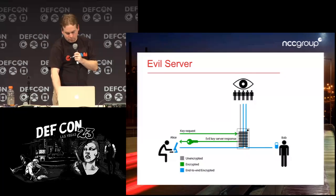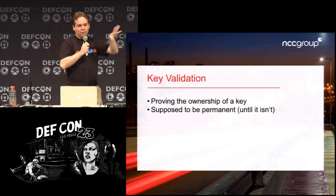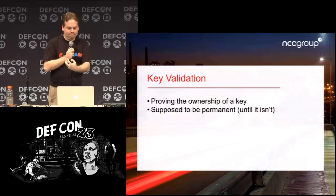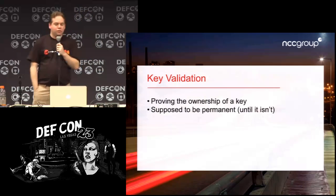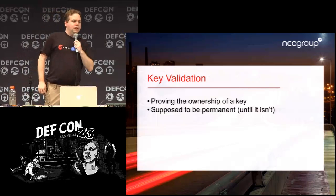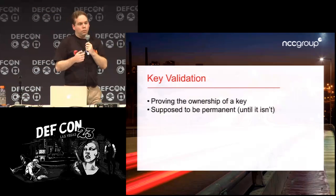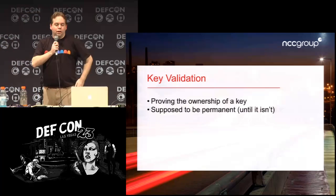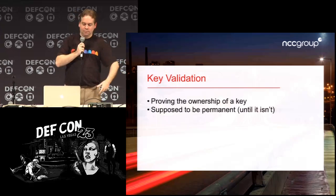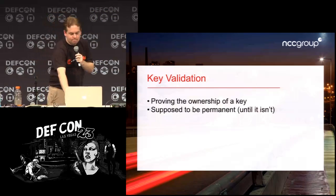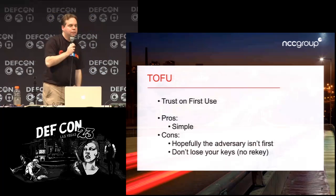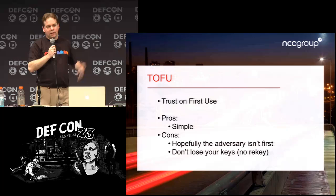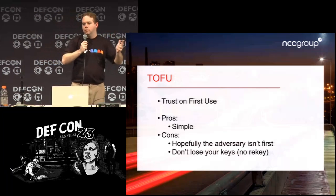To prevent this, we need key validation — Alice must find a way to determine if the key she received is really Bob's key. This process proves ownership of the key. Ideally, whatever app you're using will do this one time: once Alice has validated Bob's key, as long as that key doesn't change, you're fine until some event causes you to re-key. The simplest approach is TOFU — Trust On First Use — which means the first time Alice sends a message to Bob, she just saves whatever key she got and considers it his. This is simple and Alice doesn't have to do any work. SSH works like this model.